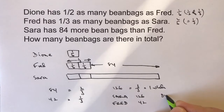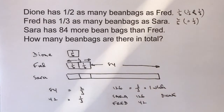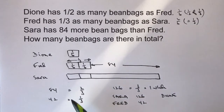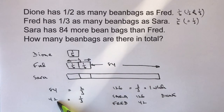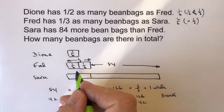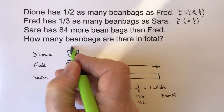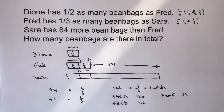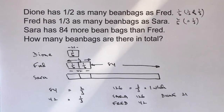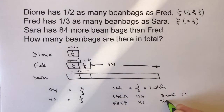And then Dion has one sixth of the total bean bags. That was the one sixth we identified earlier, which is half of Fred's 42. So this will be 42 for Fred along here, and half of 42 is 21. So Dion has 21 bean bags. The total amount of bean bags is Sarah's 126, plus Fred's 42, plus Dion's 21, and if we add all of that together we get a total of 189.